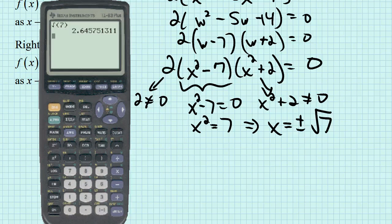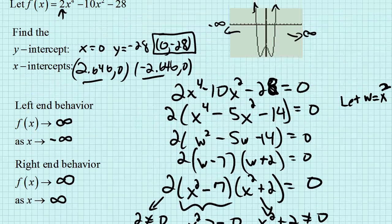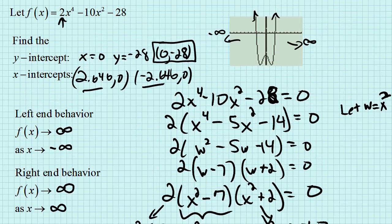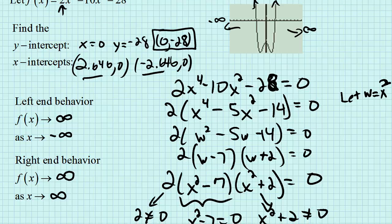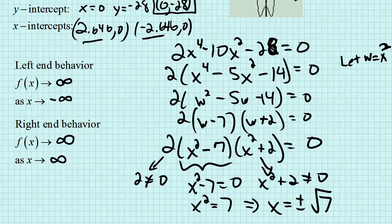Okay, great. So that solves the problem. We have found the x-intercepts, we found the y-intercept, we graphed it, we know the left-end and right-end behavior. We even can find those x-intercepts algebraically.